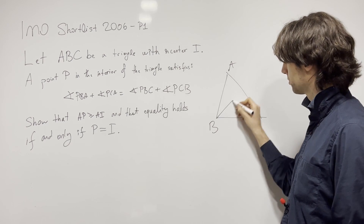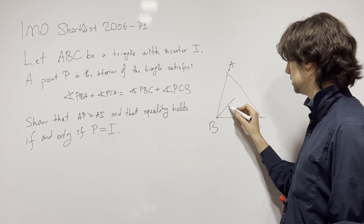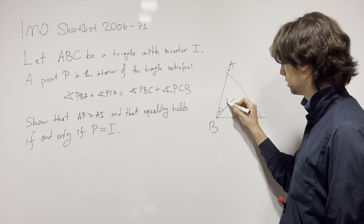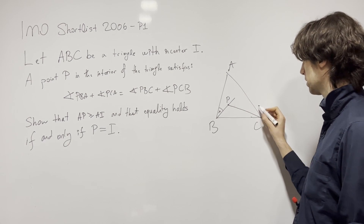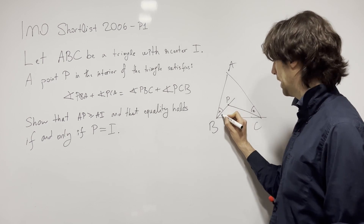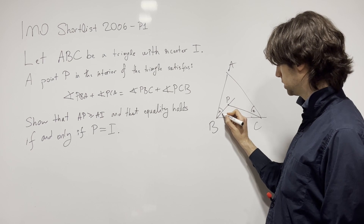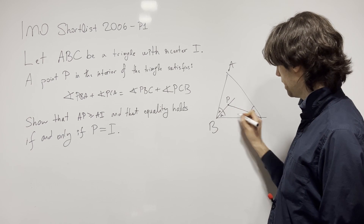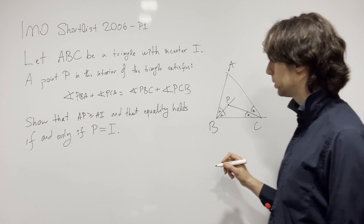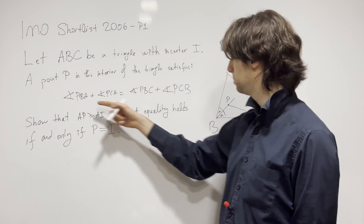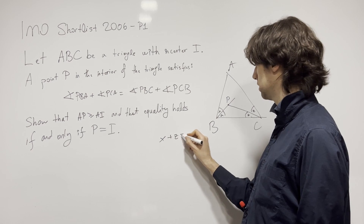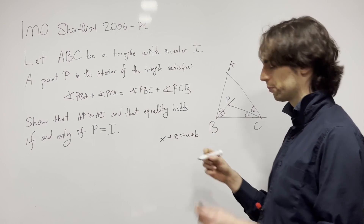We have angle PBC — let's call this x — and angle PCA, call this z. Call angle PBA call this a, and angle PAC call this b. So the problem condition gives us x + z = a + b.